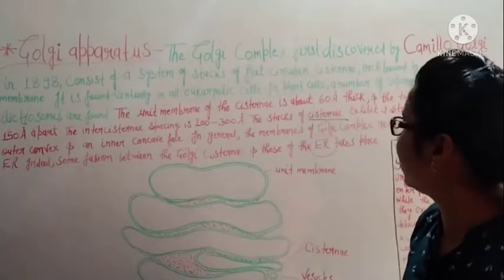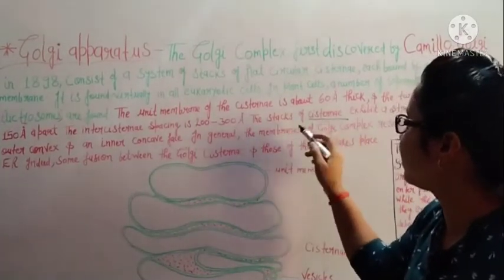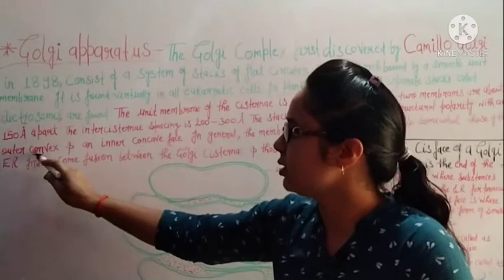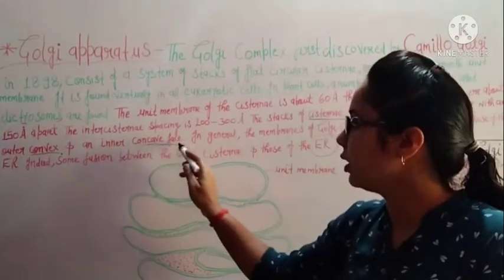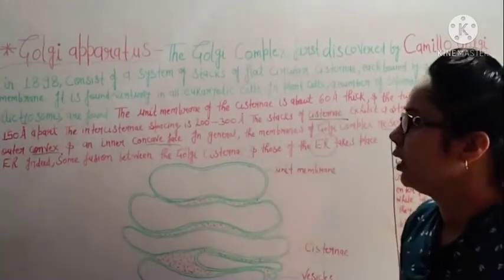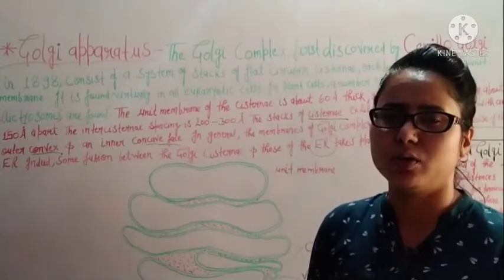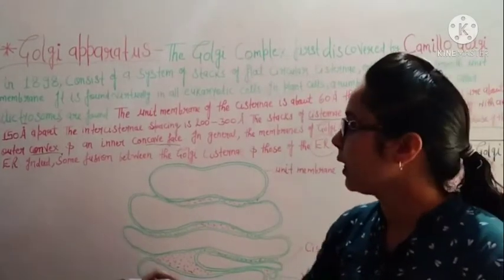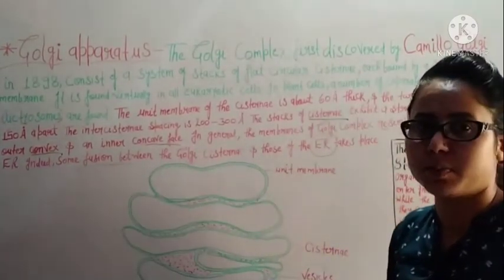The stacks of cisternae exhibit a structural polarity with an outer convex phase and an inner concave phase. The membranes of the Golgi complex resemble somewhat those of the endoplasmic reticulum, and indeed some fusion between the Golgi cisternae and those of the endoplasmic reticulum takes place.